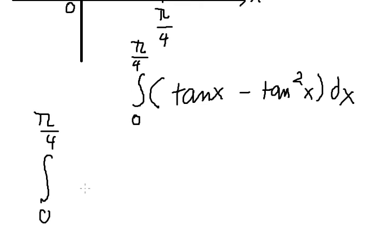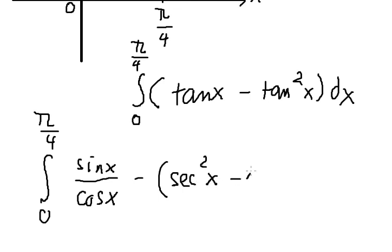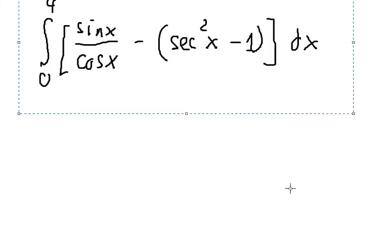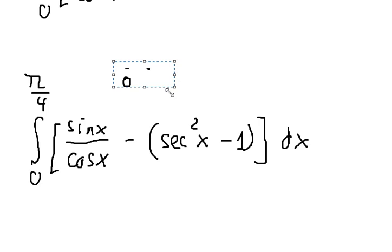For tan x we have sine x over cosine x. For tan²x, we use the identity tan²x = sec²x minus 1. Opening the bracket, we get negative sec²x plus 1.